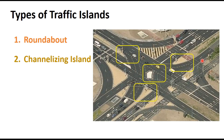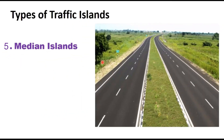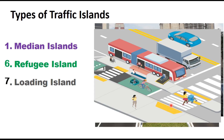Channelizing islands are usually triangular in shape and are an integral part of intersection design. Divisional islands are provided on four or more lane highways to segregate opposing traffic and can also be provided at intersections to divide through traffic from turning traffic. Median islands are provided to separate opposing traffic streams usually along the highway or in approaches to an intersection. Refuge islands provide space for pedestrians to cross the street and allow pedestrians to wait until vehicle movement stops. The last type is loading islands, provided at bus stops for protection to bus riders.